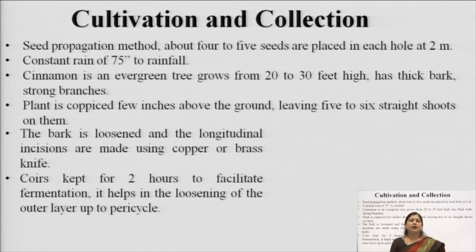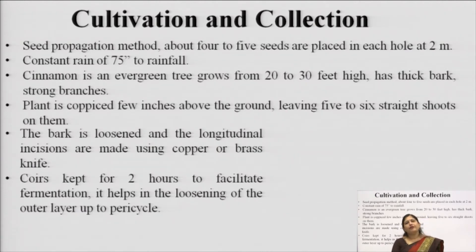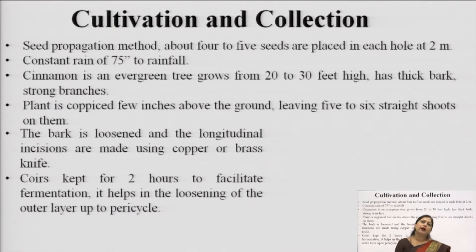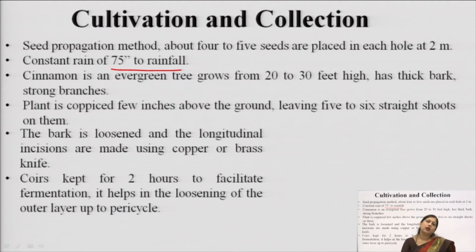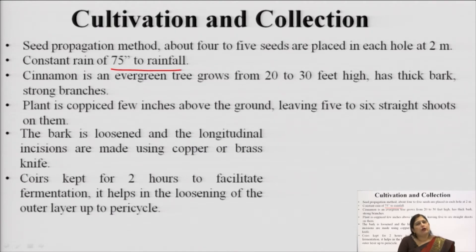Regarding the cultivation and collection of cinnamon, seed propagation is generally done — seeds are the best method. About 4 to 5 seeds are placed in one hole, with holes made at 2 meter distances. It requires a constant rainfall of around 75 inches; if rainfall is insufficient, artificial irrigation must be provided so that water shortage does not occur during germination. The plant grows to a very tall height of around 20 to 30 feet.